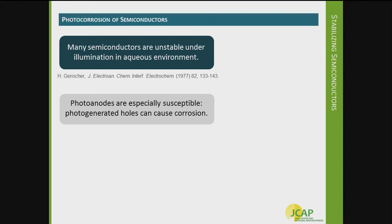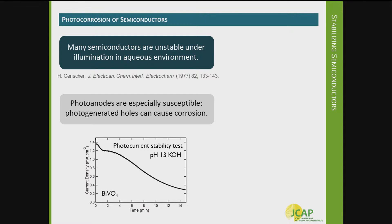Photoanodes are where the oxidation reaction occurs. For a water splitting system, that's where water oxidation occurs, and for CO2 reduction we're also interested in doing water oxidation at the photoanode. Photoanodes are more susceptible because they have extra photo-generated holes in the semiconductor, and these holes can go towards corroding the semiconductor rather than the oxidation reaction that you want to occur.